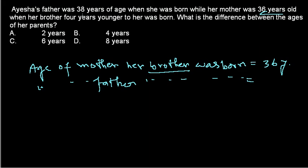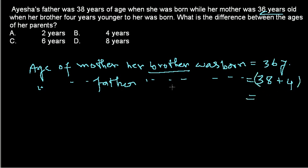The age of Aisha's father was 38 years when Aisha was born. After four years, her younger brother was born. So the age of her father at the time of her brother's birth will be 38 plus the four years after — that is, 38 plus 4 equals 42 years.